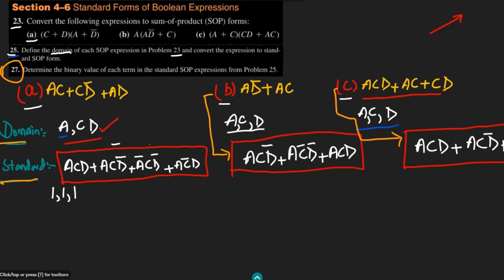Similarly, for the second expression, for ACD prime we should have 1, 1, and 0, and the complement of it will also give me 1. For A prime CD, I will have 0, 1, 0, and for it I will have 1, 0, 1.